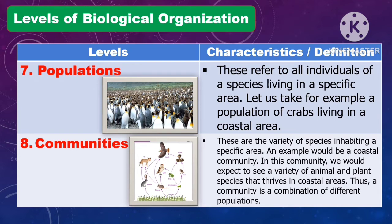Another level of biological organization is communities. These are the variety of species inhabiting a specific area. An example would be a coastal community, where we would expect to see a variety of animals and plant species that thrive in the coastal area. Thus, a community is a combination of different populations.